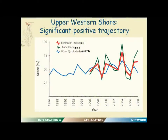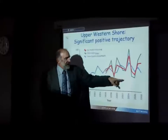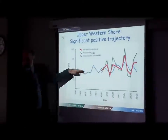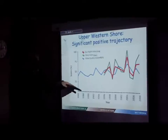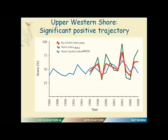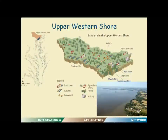Looking at the Upper Western Shore: it didn't come up in the analysis of positive trajectories for the Bay Health Index — it wasn't significant. But it does come up for the water quality index. You can see why it didn't come up as positive because it's noisy, but looking at the water quality — the blue line — it is statistically significantly improving. Even though it's noisy, your eye can follow that positive trajectory. This area, which came up as the number one score in the 2008 report card, also comes out to be good and getting better. So let's look at what's going on in that watershed and what could be changing over 25 years to make it improve.